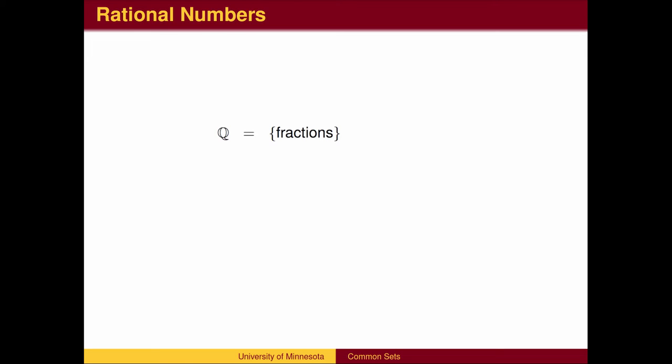We needed a bigger set of numbers to handle the arbitrary division of integers. We call this set the rational numbers. The set of rationals is denoted by the letter Q. It is the set of all quotients of integers, as long as the denominator is not 0.